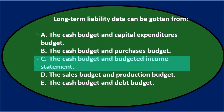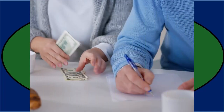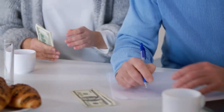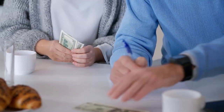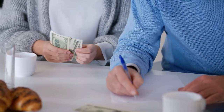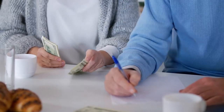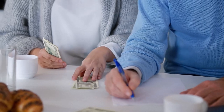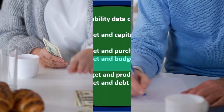Option C says the cash budget and budgeted income statement. The cash budget seems reasonable, but the income statement isn't really where long-term liability lives. We might see interest expense on the income statement, but the long-term liability itself would appear on the balance sheet. So probably not C.